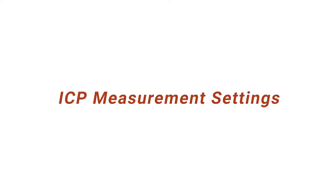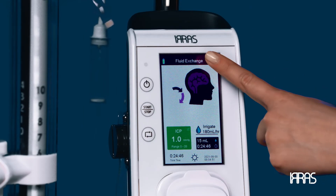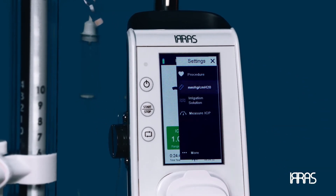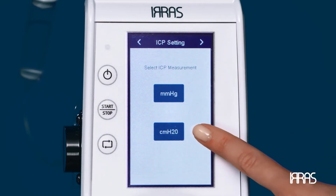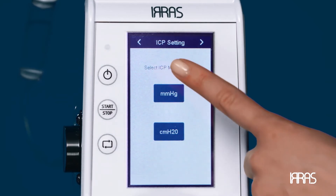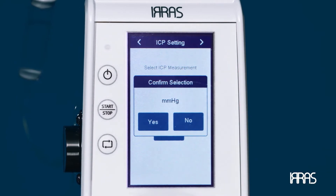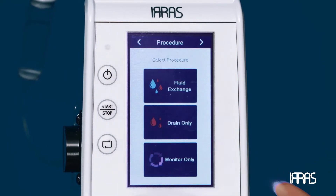ICP measurement settings — to change the pressure measurement settings, go to the settings menu and select the millimeters of mercury or centimeters of water option. Then select your desired measurement. Once you confirm your selection, the control unit will return to the main screen.